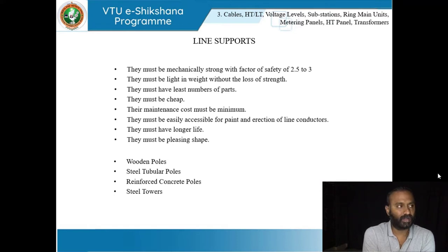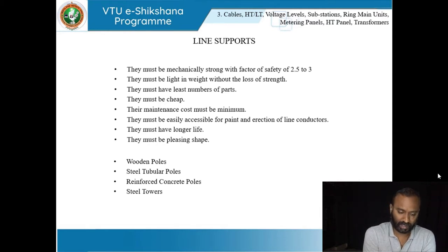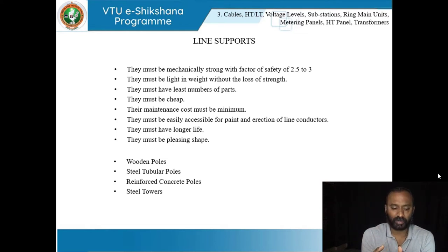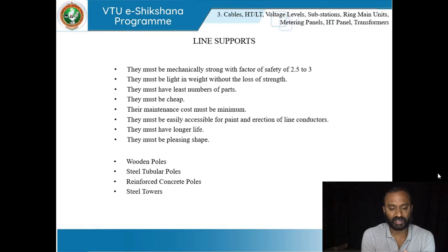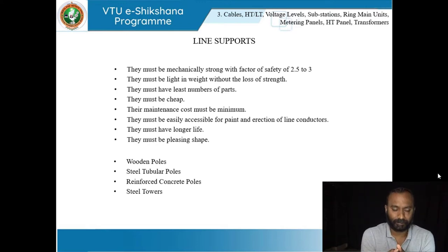Line supports are the structures that hold the conductors. For 220 kV big transmission towers, the tower itself is the support. These can be wooden poles, tubular poles, reinforced concrete poles, or steel towers — all called line supports, and there are several points regarding their application and function.